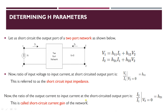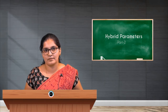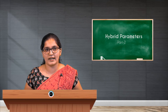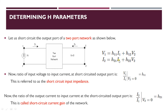With V2 equal to 0, the ratio of output current to input current at the short circuited output port is found from the second equation. When V2 becomes 0, we get H21 equal to I2 divided by I1. This ratio of output current to input current is nothing but current gain, called the short circuit current gain, which is H21. So far we have obtained two H parameters, H11 and H21, by short circuiting the output.